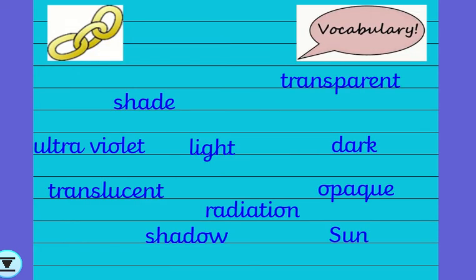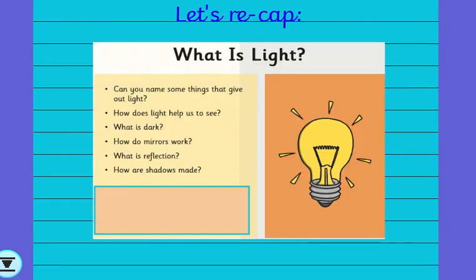So here are some of our vocab that we started looking at last week. We're going to be focusing on three specific words this week and you will find them out shortly. So let's just recap first. Last week we talked about what is light. So can you name some things that give out light?